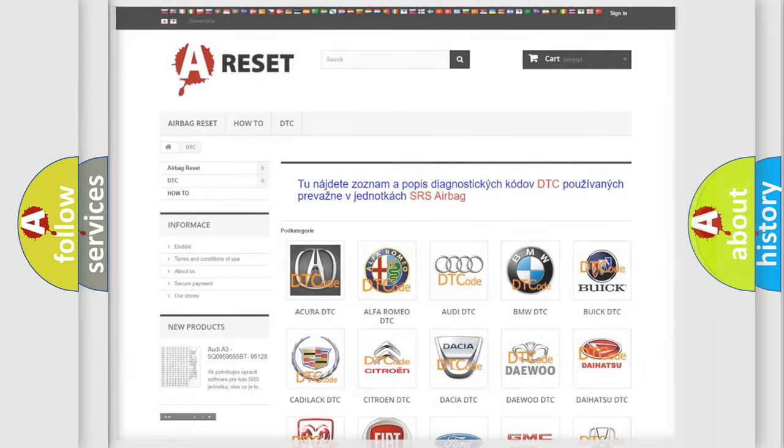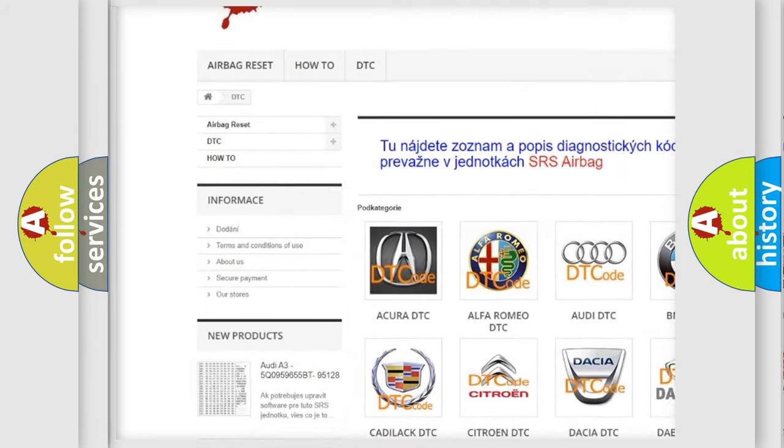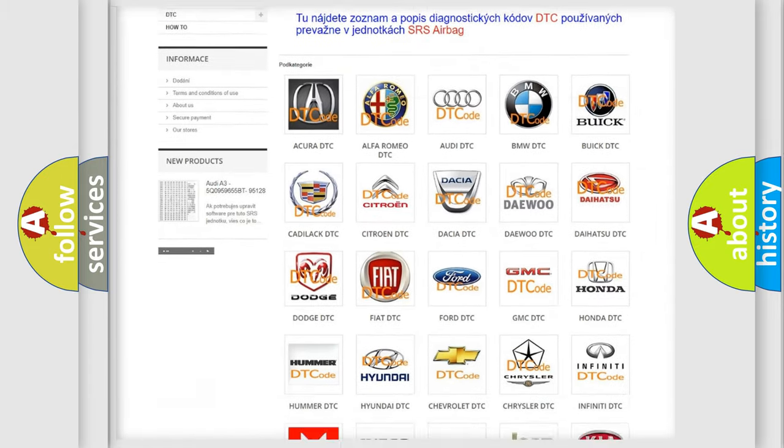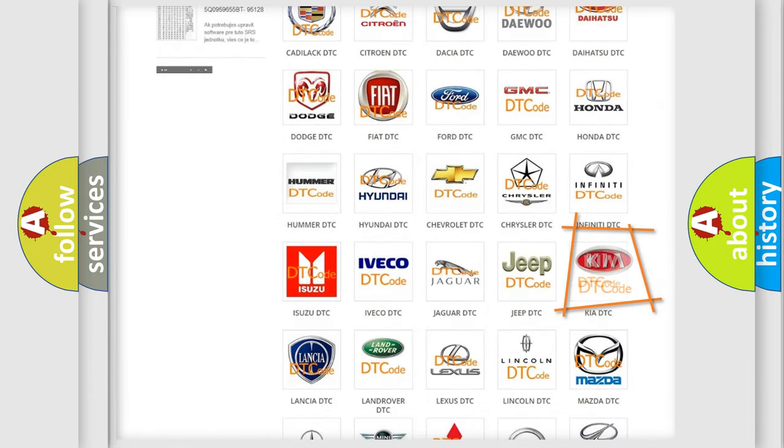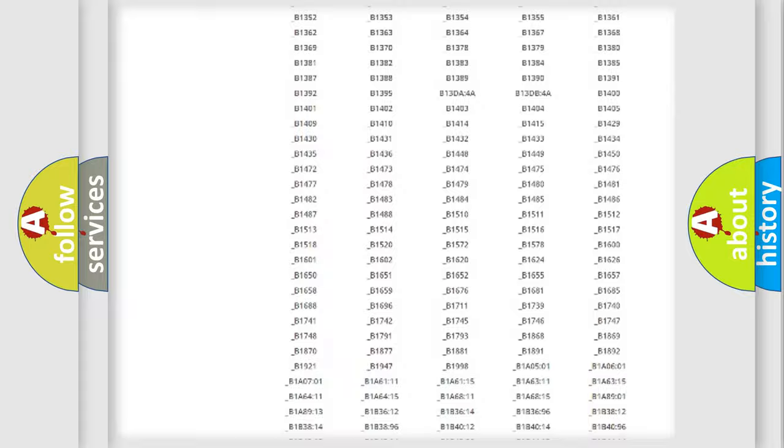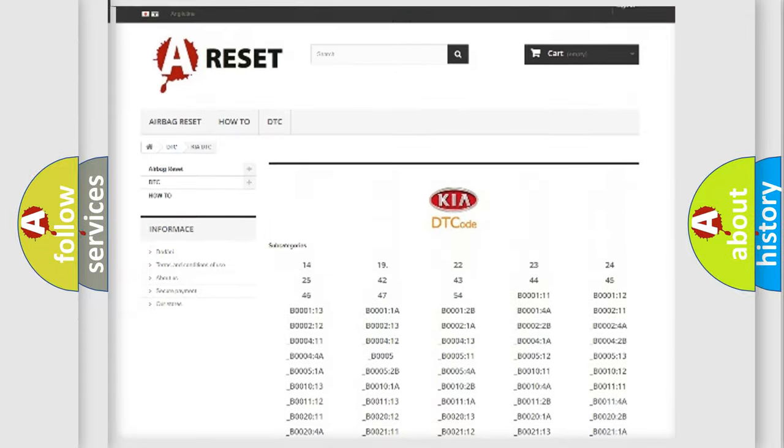Our website airbagreset.sk produces useful videos for you. You do not have to go through the OBD2 protocol anymore to know how to troubleshoot any car breakdown. You will find all the diagnostic codes that can be diagnosed in Kia vehicles.